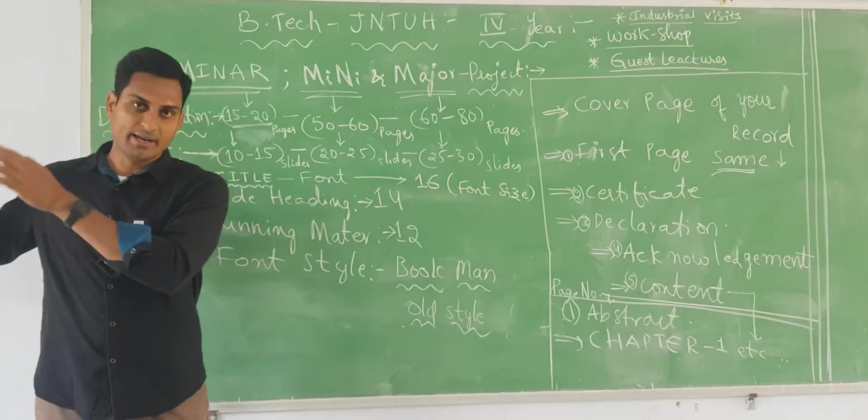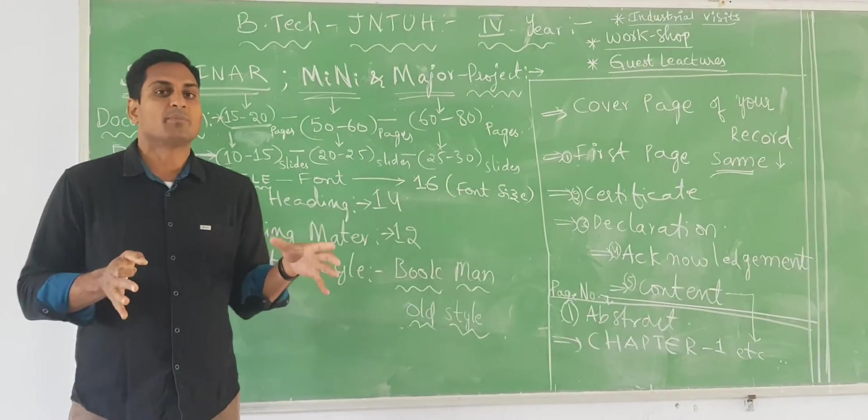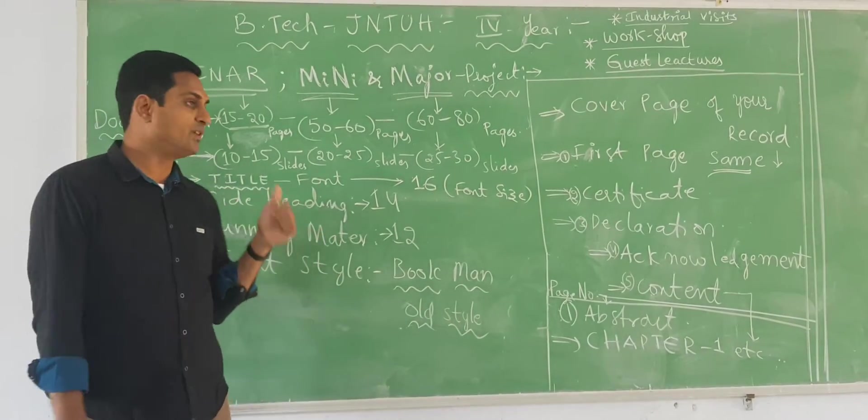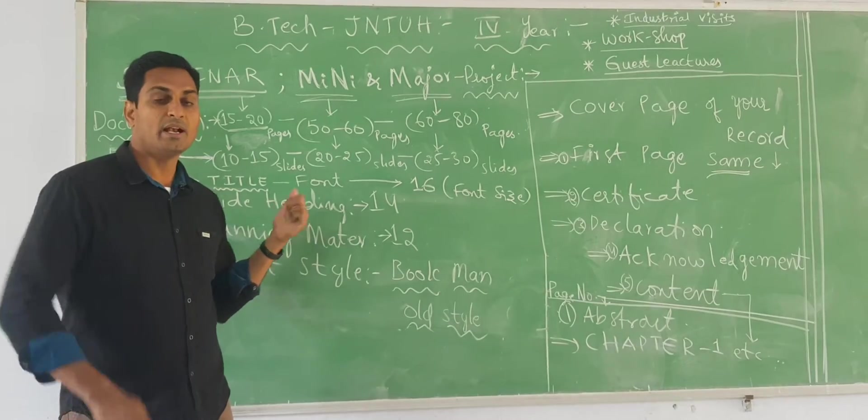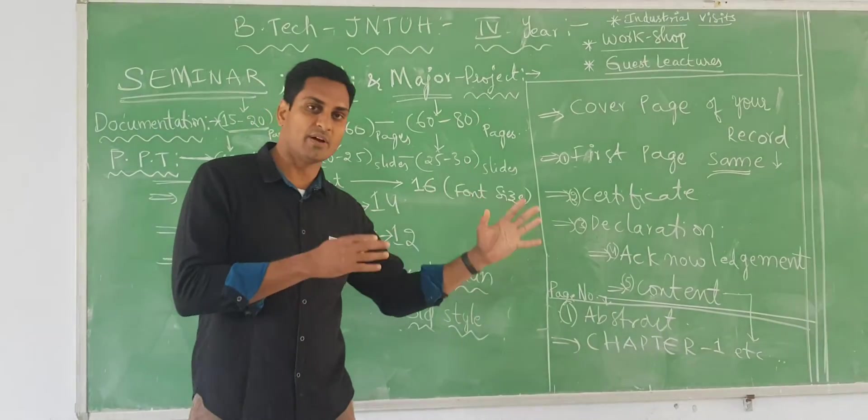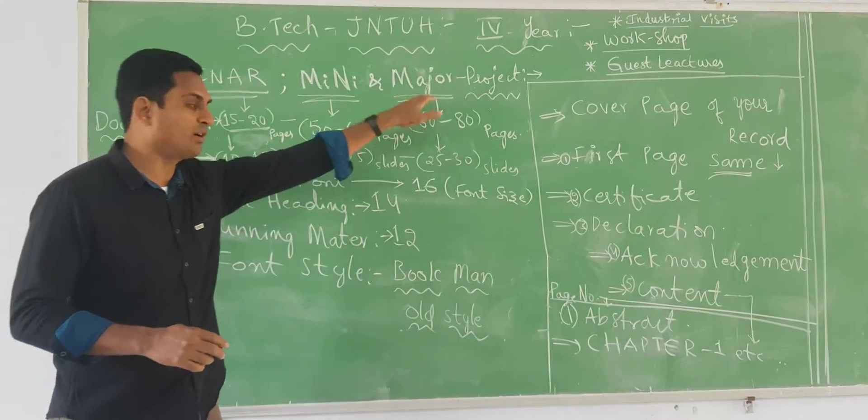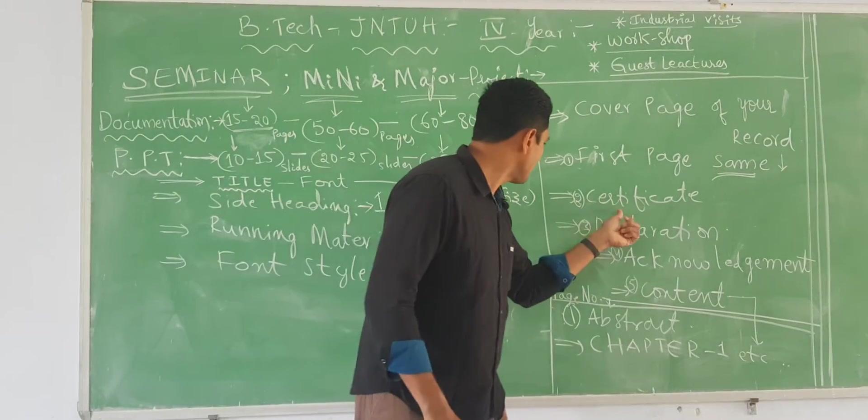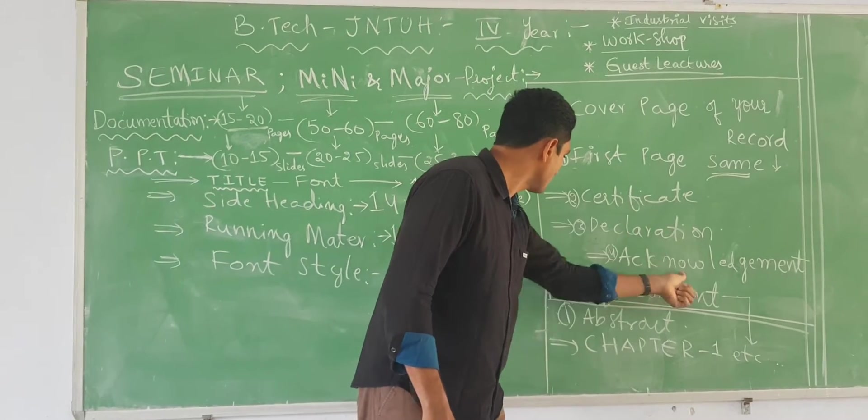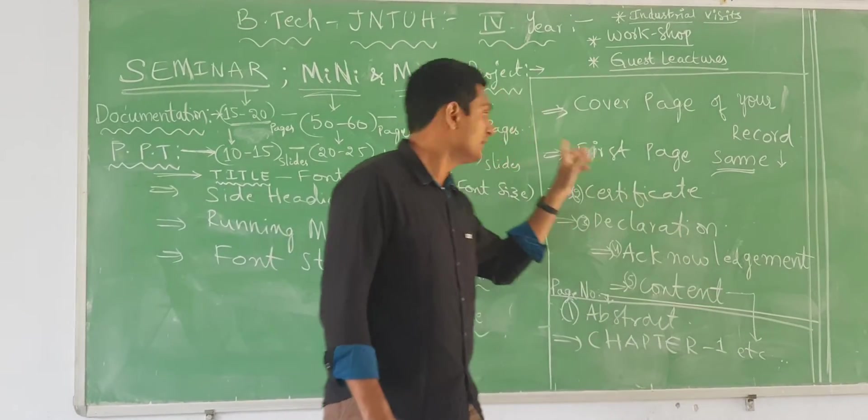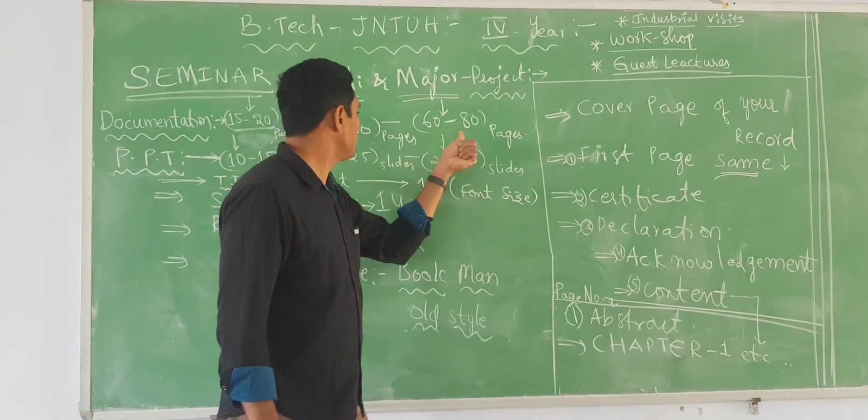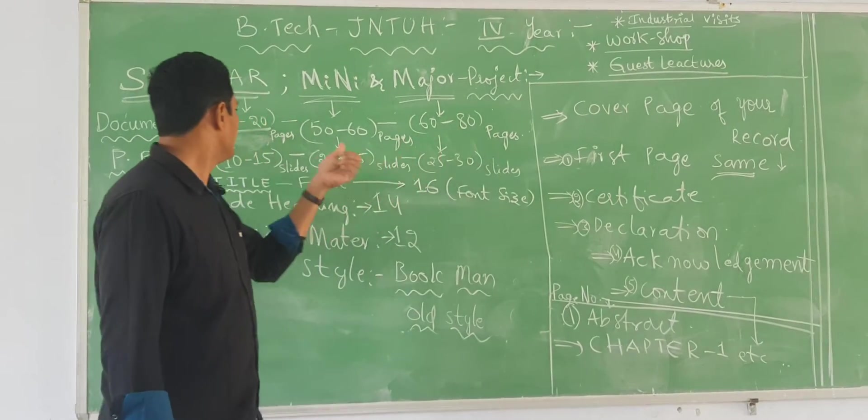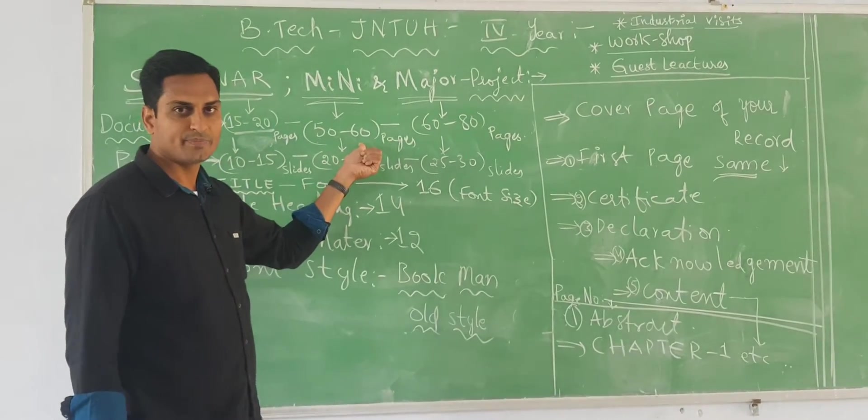For that what are the olden days approach? What is existing system? Nowadays how it is executing with a software? And what you are proposing? What you are extending for that? That same thing will be followed in these two things. Then here the brief thing is certificates, declaration, acknowledgment and content. Content will differ. So that the 60 to 80 pages will be increased here 50 to 60 pages.